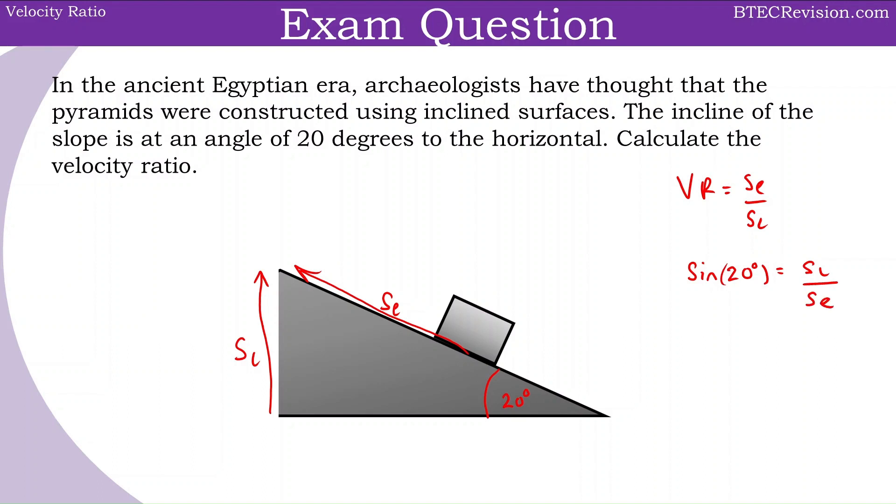Now, rearranging this for SE, we can write SL divided by sin 20 degrees. The reason we did that is so we can replace the SE in our velocity ratio equation.